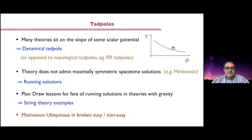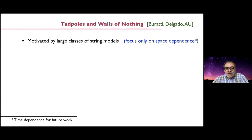The motivation is that these kinds of tadpoles appear everywhere — in particular, as soon as you break supersymmetry it's typical that you generate them, and very often they are runaway or the supersymmetry breaking happens when you're not sitting at the minimum. It's interesting to ask what happens with running solutions. For this talk I will focus on space-dependent running solutions; time-dependent ones are very interesting for cosmology but we are leaving those for future work.